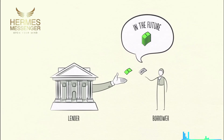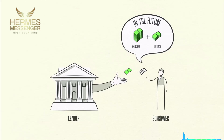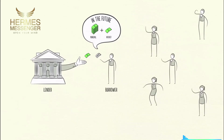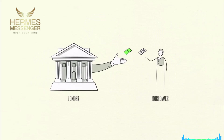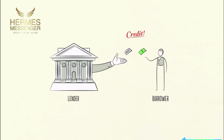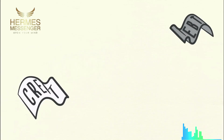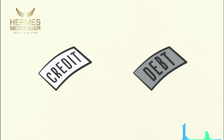Borrowers promise to repay the amount they borrow, called principal, plus an additional amount, called interest. When interest rates are high, there is less borrowing because it's expensive. When interest rates are low, borrowing increases because it's cheaper. When borrowers promise to repay and lenders believe them, credit is created. Any two people can agree to create credit out of thin air. That seems simple enough, but credit is tricky because it has different names. As soon as credit is created, it immediately turns into debt.